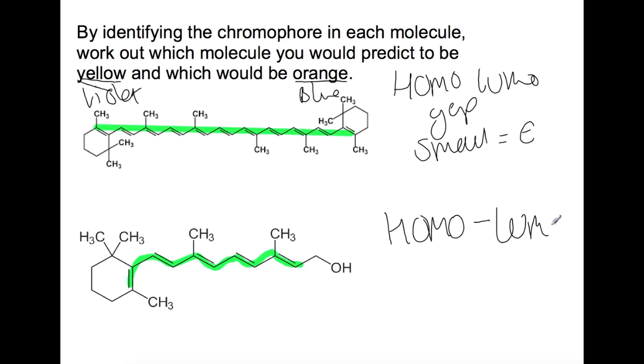For the smaller conjugated system, your HOMO LUMO gap is slightly larger, and that means that the energy required will also be larger. So as we looked at here, violet is more energetic than blue.